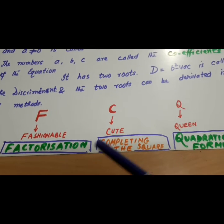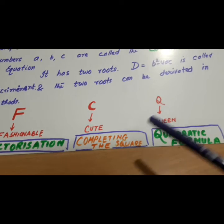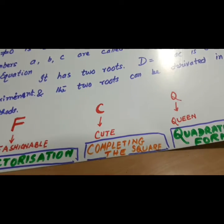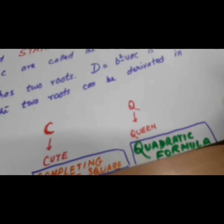F stands for factorization. C is completing the square. And Q is the quadratic formula. Now, we will go ahead and see that how these formulas are derived.